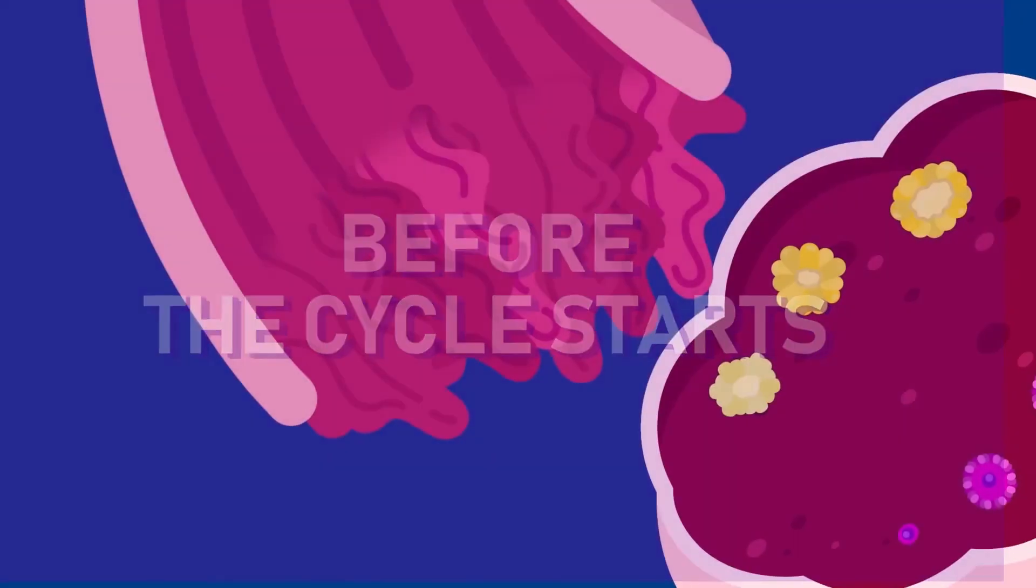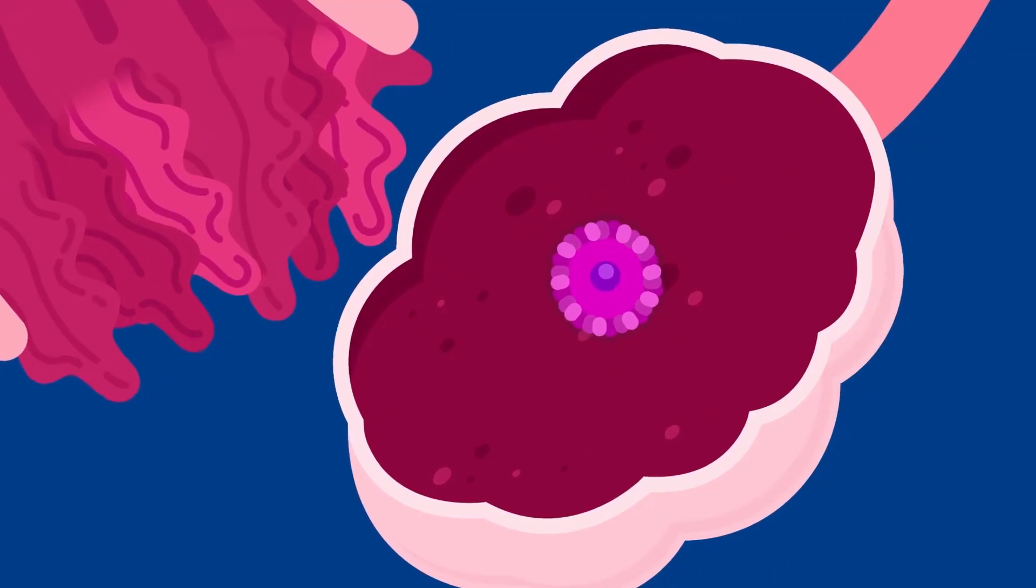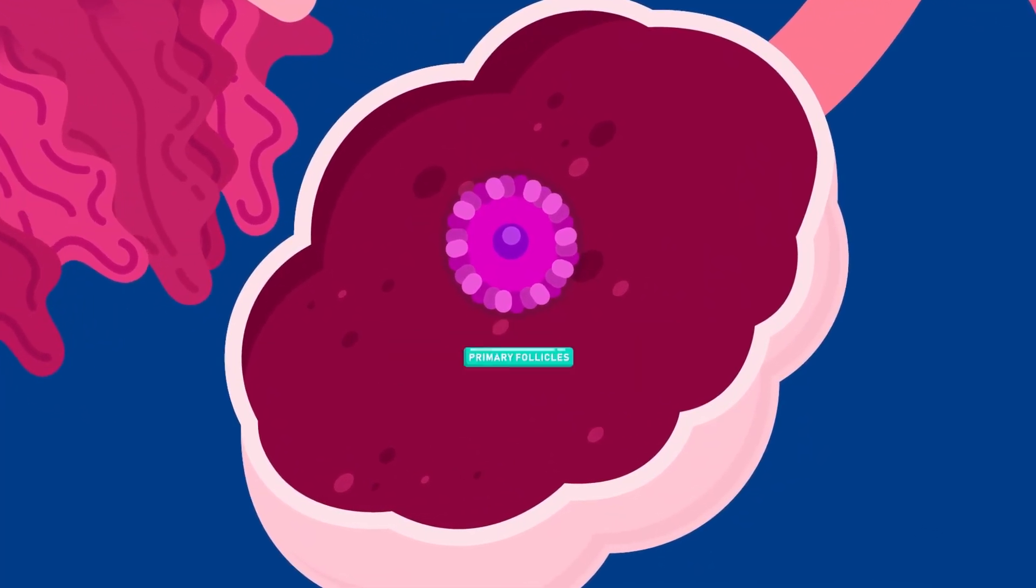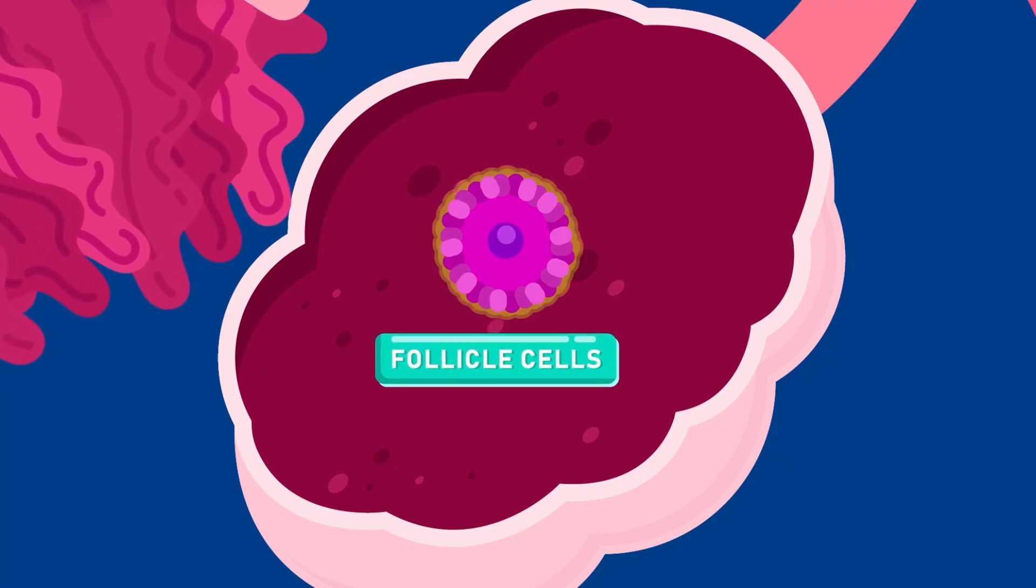Before the cycle starts, inside the ovary, there are many developing follicles. The young follicles are called primary follicles. Each primary follicle consists of a potential egg cell surrounded by a layer of smaller cells known as follicle cells.